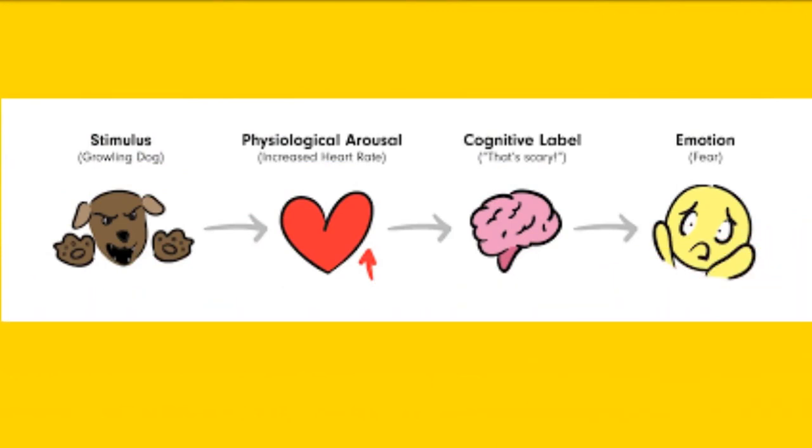Three, the Schachter-Singer theory, also known as the two-factor theory of emotion, states that two factors are needed to experience emotion. One: environmental stimuli elicit a physiological response. Two: we cognitively appraise this physiological activity and try to give it the correct label.